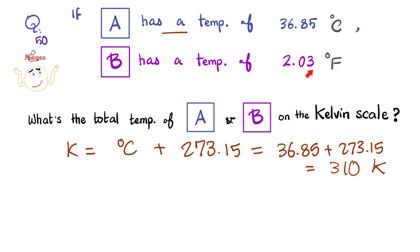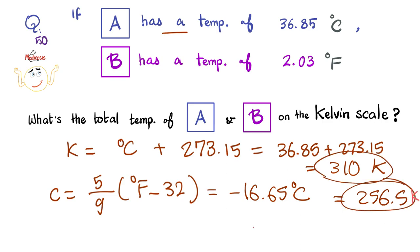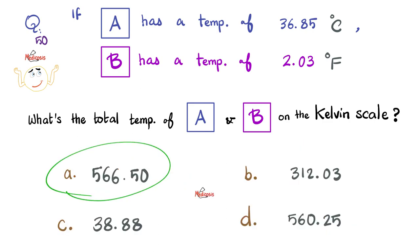As for B, which is in Fahrenheit, first you convert that to Celsius. Celsius equals 5 over 9 times the temperature in Fahrenheit minus 32. This will give me negative 16.65 degrees Celsius. Plug the result into this equation again and you get the temperature in Kelvin, which equals 256.5. Then you add this number to this number and the result is 566.5 Kelvin, which makes A the correct answer.